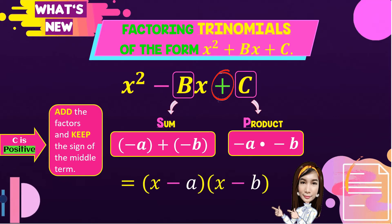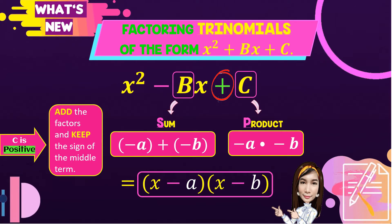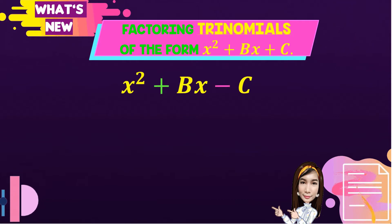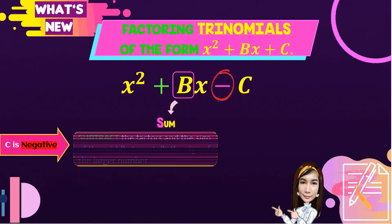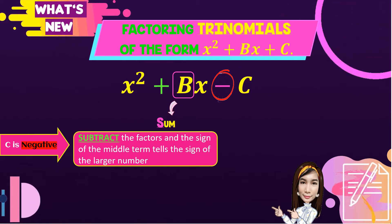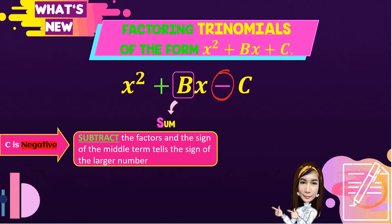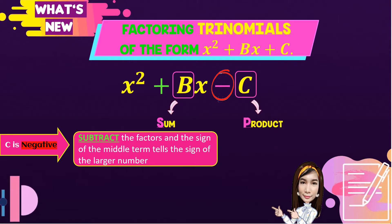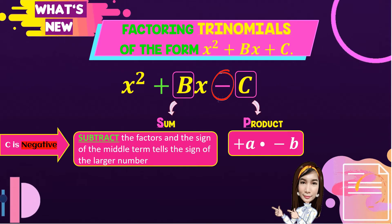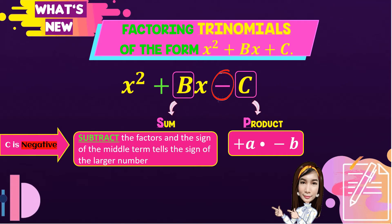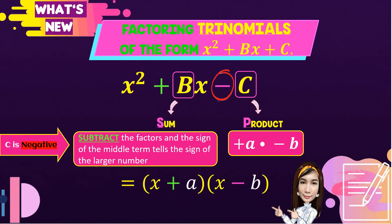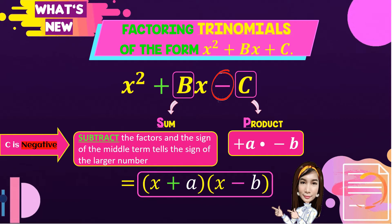Now, we obtain quantity x minus a times the quantity x minus b as the factored form of the given trinomial. Next, given x squared plus bx minus c, b is the sum. When c is negative, we subtract the factors and the sign of the middle term tells the sign of the larger number. For the product, we have different signs — one is positive and the other is negative — so positive times negative equals negative c. We obtain quantity x plus a times the quantity x minus b as the factored form.